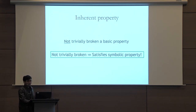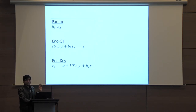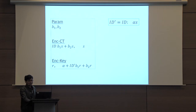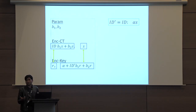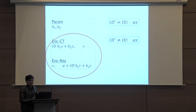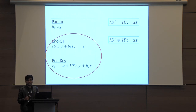As an example, let's go back to the encoding for the equality predicate. We saw that if id' equals id, then these variables and polynomials can be combined to recover alpha·s, which is fine. But if id' is not equal to id, then no matter how you combine these variables and polynomials, you cannot get alpha times s. As a result, this encoding scheme is not trivially broken, so it is symbolically secure.